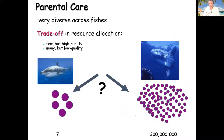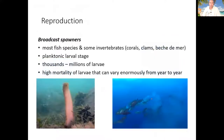Another difference in reproductive strategies is parental care — whether the adults care for their young ones. Fish with parental care produce fewer eggs or young ones. Most fish, however, don't have parental care, which means they produce hundreds, thousands, or millions of eggs at a time, because the chances of survival are very low when there is no parental care and the young ones have to survive on their own.